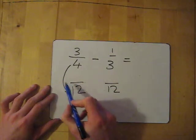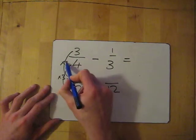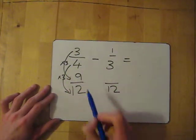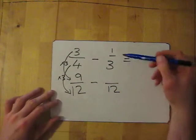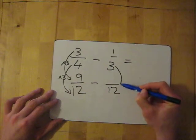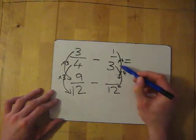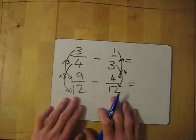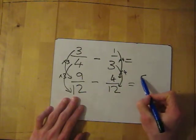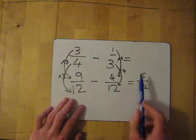We write twelve below both fractions. To get from four to twelve, we times by three, so we times the top by three as well: three times three gives nine, so three quarters equals nine twelfths. To get from three to twelve, we times by four, so we times the top by four: one times four gives four. Now we subtract the tops: nine take away four is five, and the bottom stays the same — so three quarters take away one third equals five twelfths.